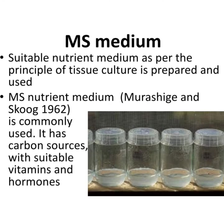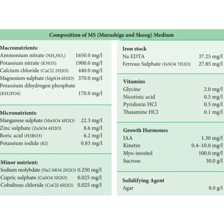The composition of MS (Murashige and Skoog) medium: Macronutrients — ammonium nitrate 1650 mg/L, potassium nitrate 1900 mg/L, calcium chloride 440 mg/L, magnesium sulfate 370 mg/L, potassium dihydrogen phosphate 170 mg/L. Micronutrients — manganese sulfate 22.3 mg/L, zinc sulfate 8.6 mg/L, boric acid 6.2 mg/L, potassium iodide 0.83 mg/L. Minor nutrients — sodium molybdate 0.250 mg/L, cupric sulfate 0.025 mg/L, cobaltous chloride 0.025 mg/L. Iron stock — sodium EDTA 37.25 mg/L, ferrous sulfate 27.85 mg/L.